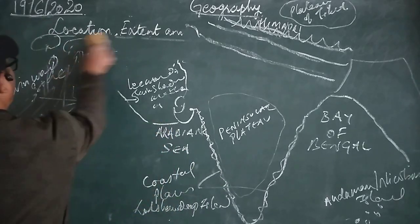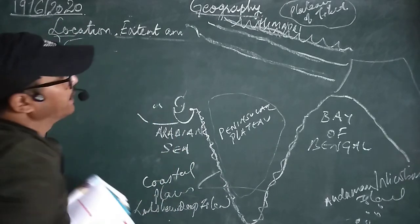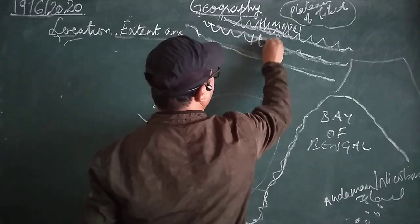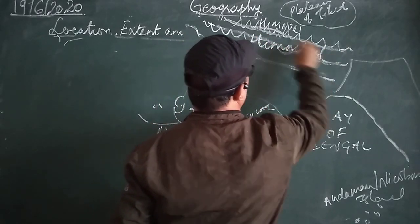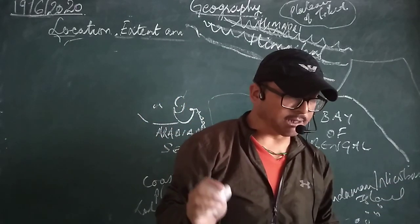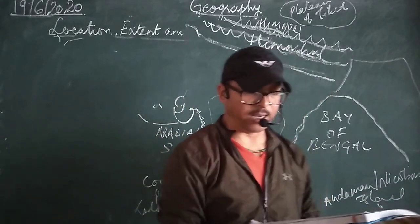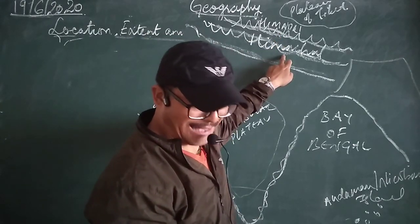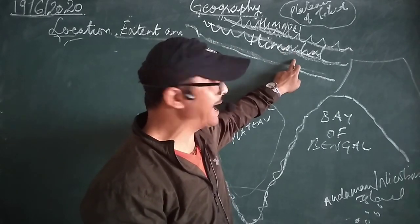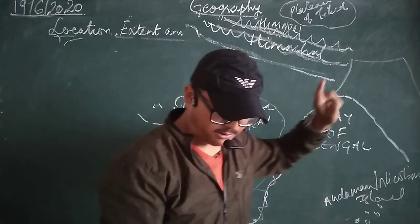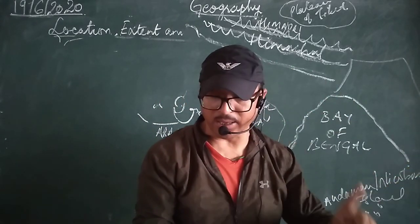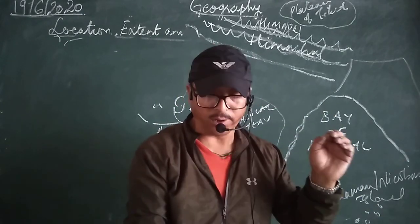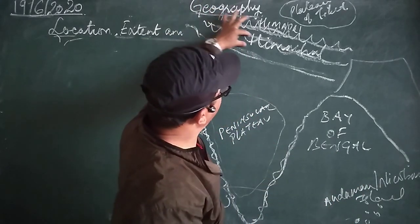Now let us move to the second range — Himachal. This range is also known as the Himachal Himalayas, the Middle Himalayas, or the Lesser Himalayas. It runs parallel to Himadri, south of it. The altitude of this range is something around 3,700 meters to 4,500 meters.